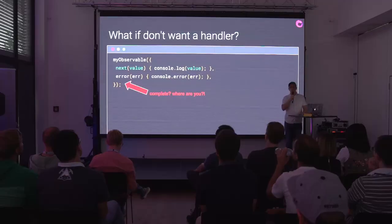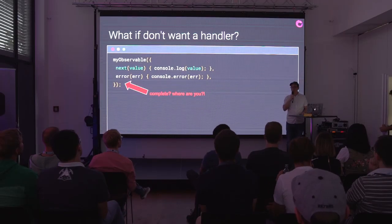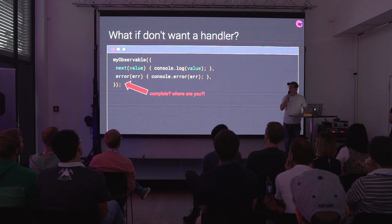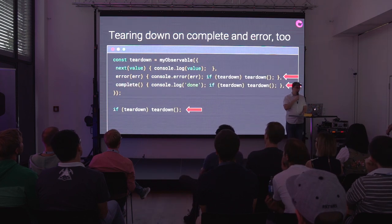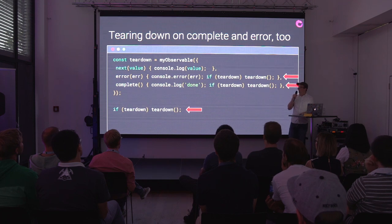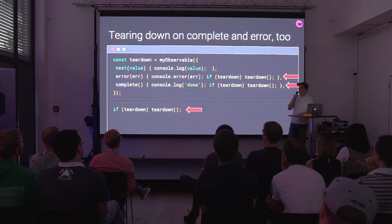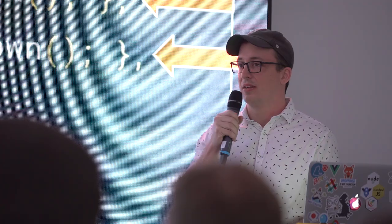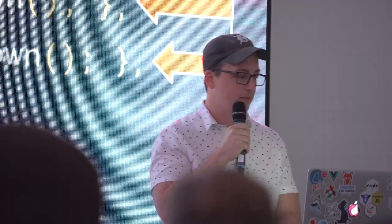What if you don't want all of the handlers? You don't care about handling every single one of these situations. Now I have to have if statements inside my function to see if those handlers exist. It would be really nice if every time it errored or completed, it actually called the teardown, so we'd be more deterministic about managing memory.